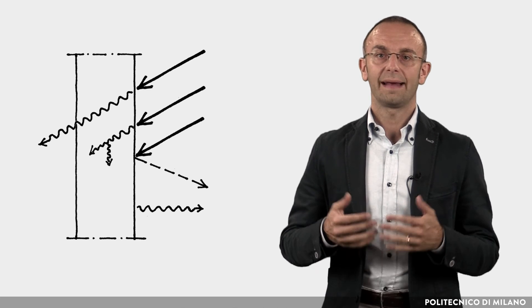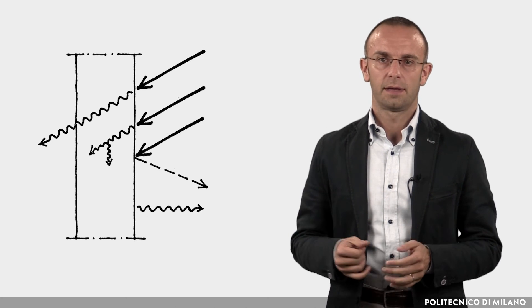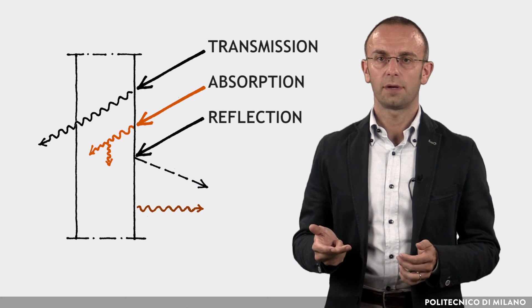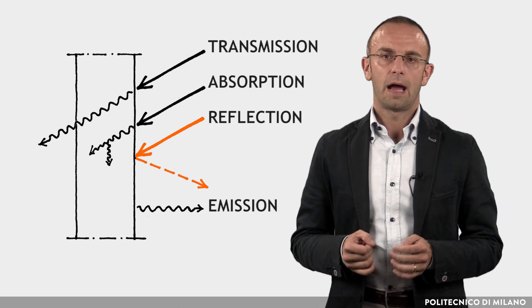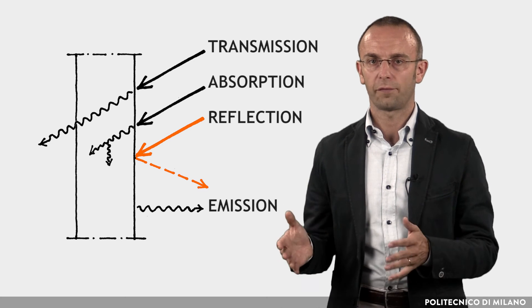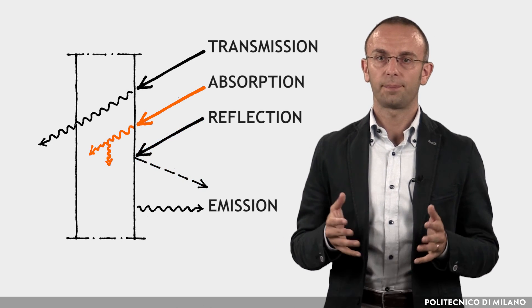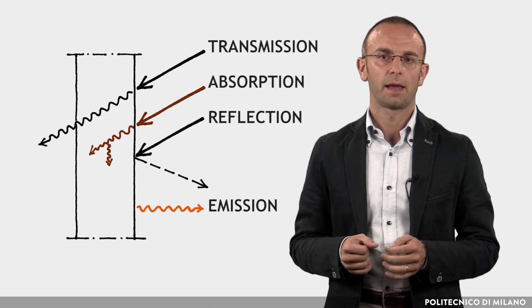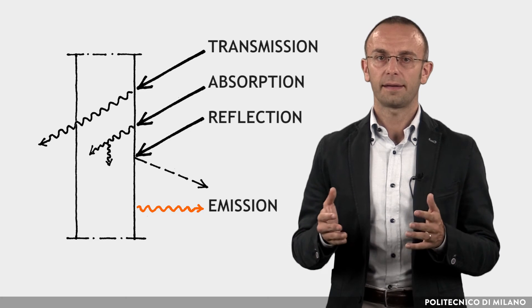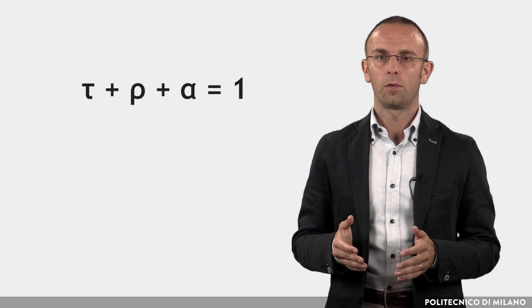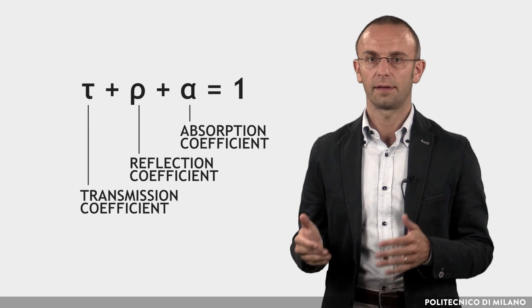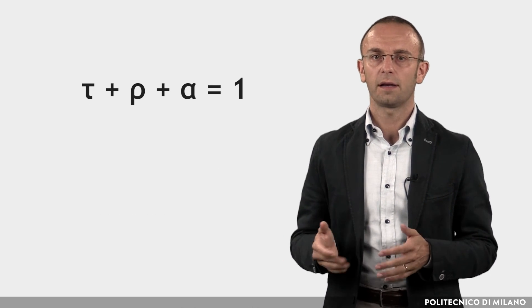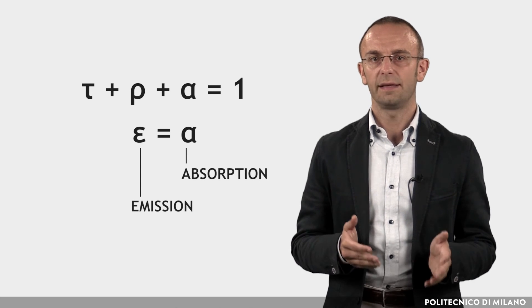There are four ways in which electromagnetic radiation interacts with matter: transmission, reflection, absorption, and emission. Transmission takes place when radiation passes through a material. Reflection, when it is reflected by the surface. Absorption, when radiation is absorbed and converted into sensible heat. Emission, when the material emits radiation from its surface. It always holds that τ, ρ, and α — respectively the transmission, reflection, and absorption coefficients — are dimensionless. For most materials commonly used in construction, emission is equal to absorption.